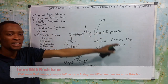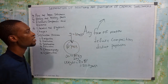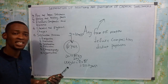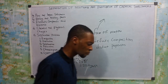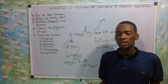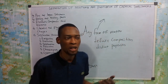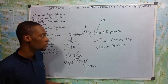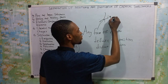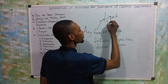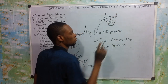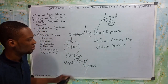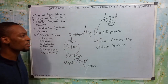Let's go to forms of matter. Forms of matter means matter exists in different forms. Without wasting much time, matter exists in three states: the solid state, the liquid state, and the gaseous state. So matter can either be solid, liquid, or gas — those are the states of matter.